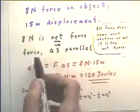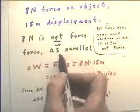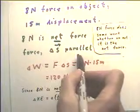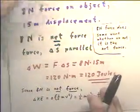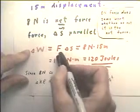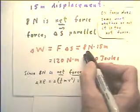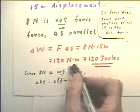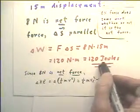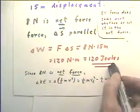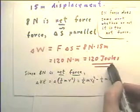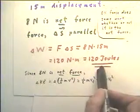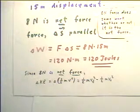So if we have an 8-Newton net force, and if the displacement delta S, the vector displacement, is parallel to the force, so that the 8-Newton net force and the delta S are parallel, then the amount of work done is just the product of the force and the displacement. 8 Newtons times 15 meters. Now, 8 times 15 is 120. A Newton times a meter is a Newton meter, and a Newton meter is something we're going to call a joule. That's the unit we use for energy. So we have 120 joules of work or energy. 120 joules of work is done. 120 joules of energy is expended to do that work.